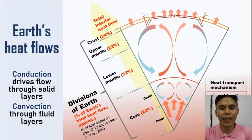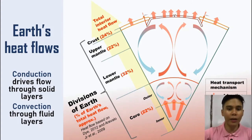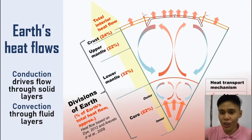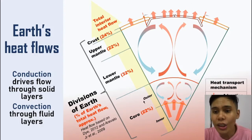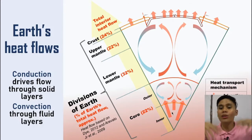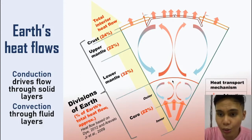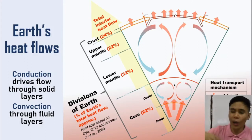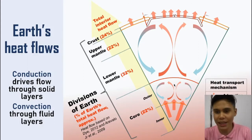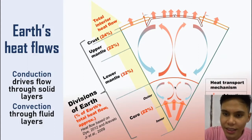That energy can actually flow through the Earth in the form of conduction and convection mostly. Conduction is heat or energy transfer through solid layers. You can see here in the diagram that the inner core — the solid core — uses conduction to move the heat through it and to the outer core. The outer core, being liquid, uses convection instead. Convection currents are currents from the flowing of material, and these convection currents carry it to the mantle.